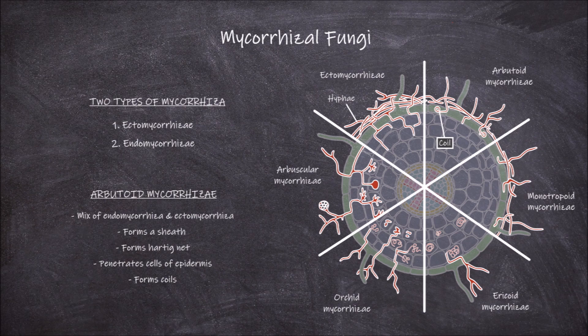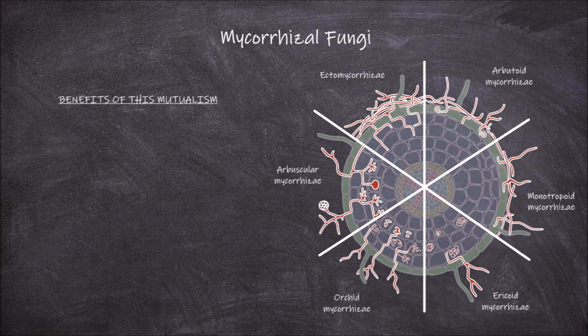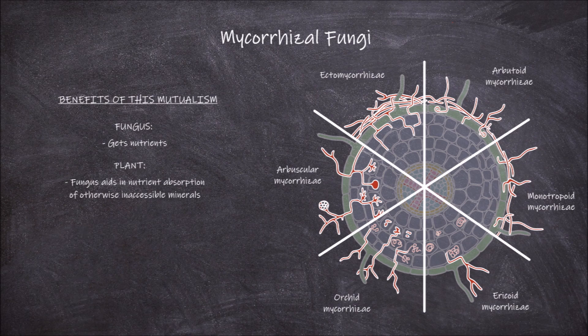The mutualism between a fungus and a plant's roots provides benefits for both parties. The fungus takes and uses nutrients from the plant in the form of carbohydrates, such as the sugars sucrose and glucose. The plant benefits from the fungus as it aids in nutrient absorption of minerals that are otherwise inaccessible to the plant without it, such as phosphorus and iron.